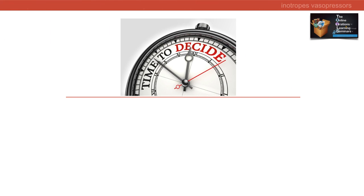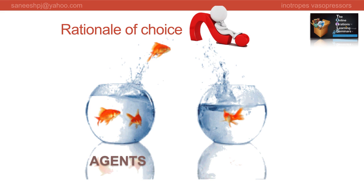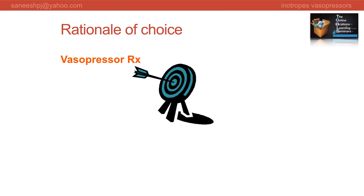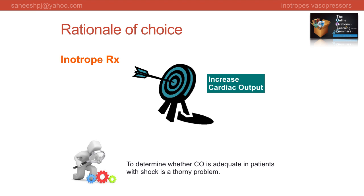Now let us get to the core theme of this lecture: how do I make my decision or choice regarding inotrope or vasopressor in the intensive care unit? Conventionally we discuss each agent by receptor affinity and where it should or should not be used. Here, we are going to choose our agent depending on what effect we require to combat the pathophysiological changes. When we choose a vasopressor, our target is to restore adequate blood pressure - though blood pressure does not always translate to blood flow at the tissue level. When we choose an inotrope, we are trying to increase cardiac output, and it is usually challenging to determine whether cardiac output is adequate in patients with shock.